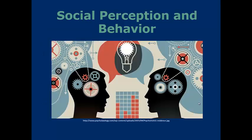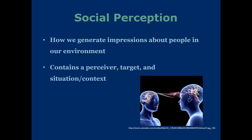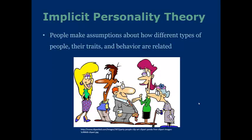Now that we've gone over social behaviors, let's go into social perception and how that relates to behavior. Social perception is how we generate impressions about people and the environment around us. It contains a perceiver — yourself — a target, what you are making an impression of, and the situation and context that both you are put in. The implicit personality theory states that people make assumptions about how different types of people, traits, and behaviors are related.